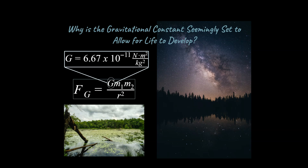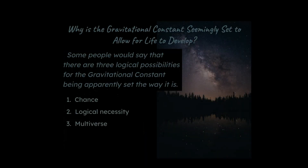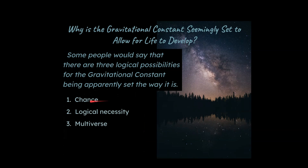And the question is why? Why is this G value set the way it is? We want to address three major ideas that people have brought up in response to this: ideas of chance, logical necessity, and the multiverse theory. I'm going to be talking about those three concepts and the problems with them as explanations for why the universe is seemingly set to allow for life to develop.